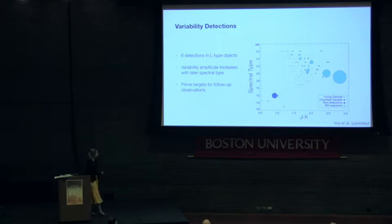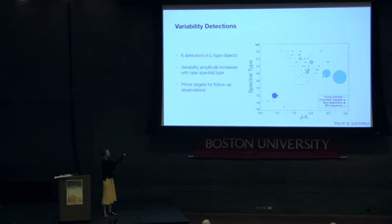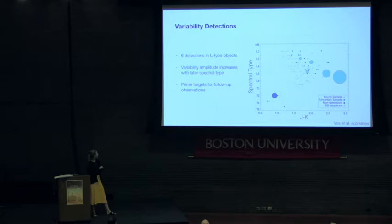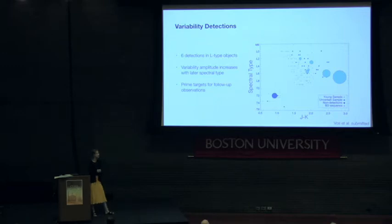In total in the survey, we detected variability in seven objects, six of which are L dwarfs, shown in light blue. In this population the large one is PSO318. The amplitude seems to increase as you go to cooler spectral types in the L sequence. We additionally detected variability in a T dwarf object; however, its youth was a bit more uncertain than the L dwarfs, so we'll have to follow up that object to confirm its youth.